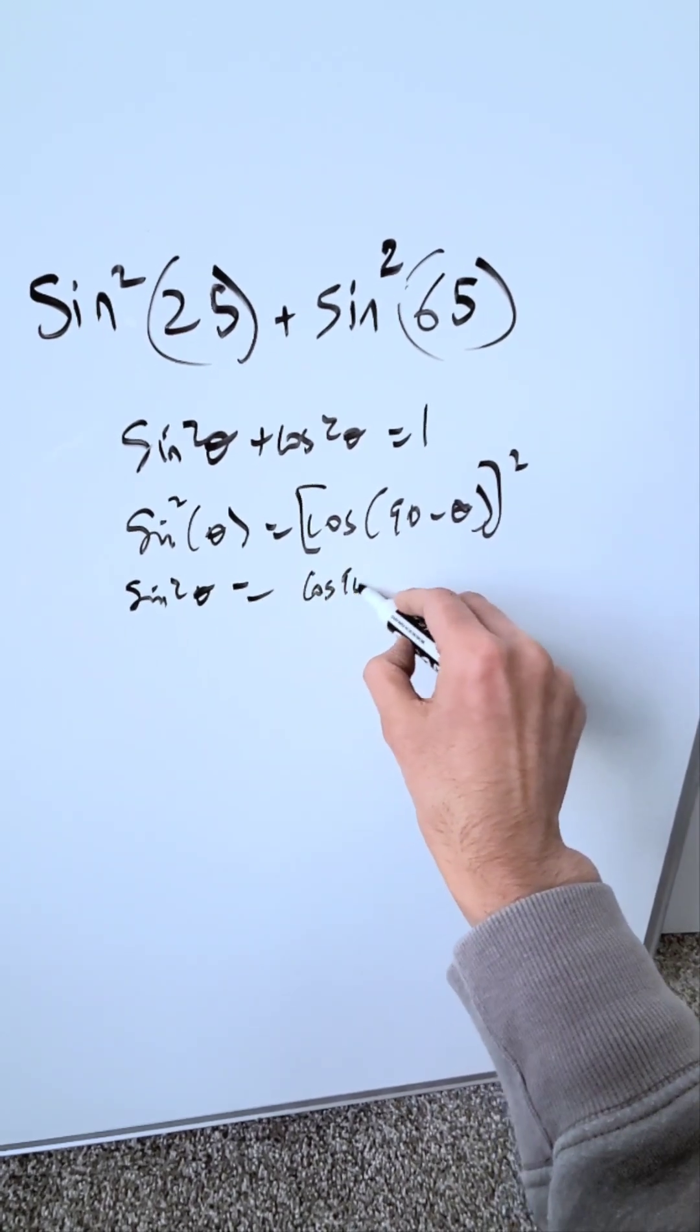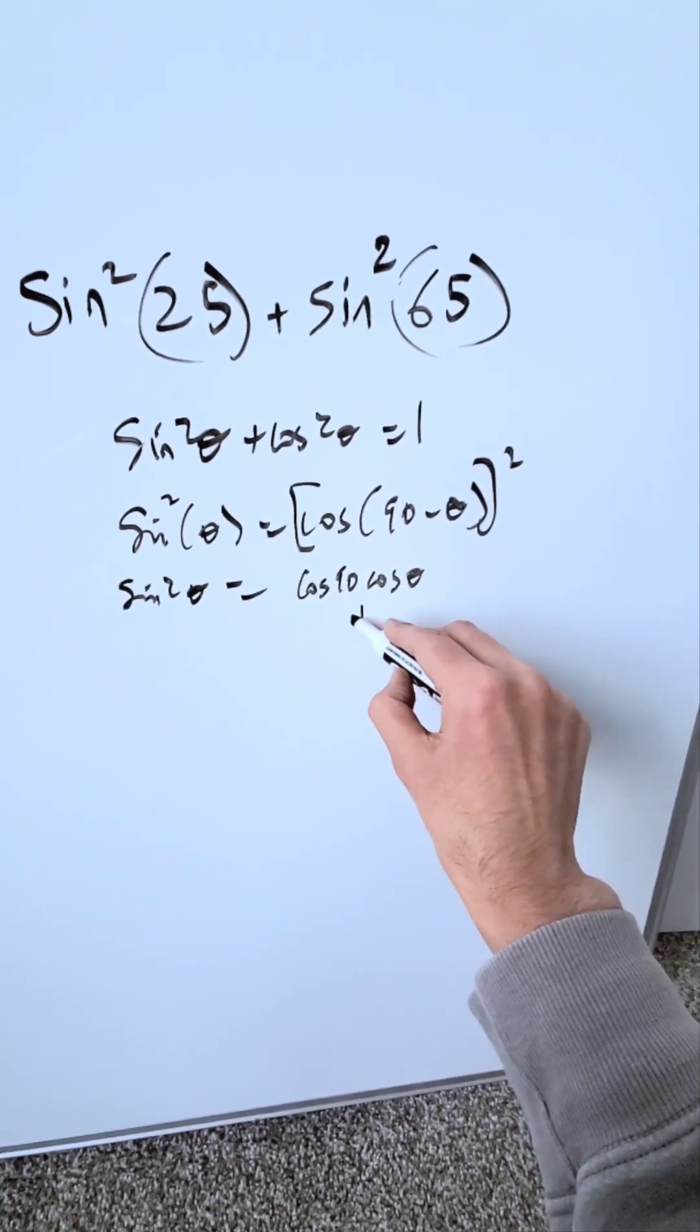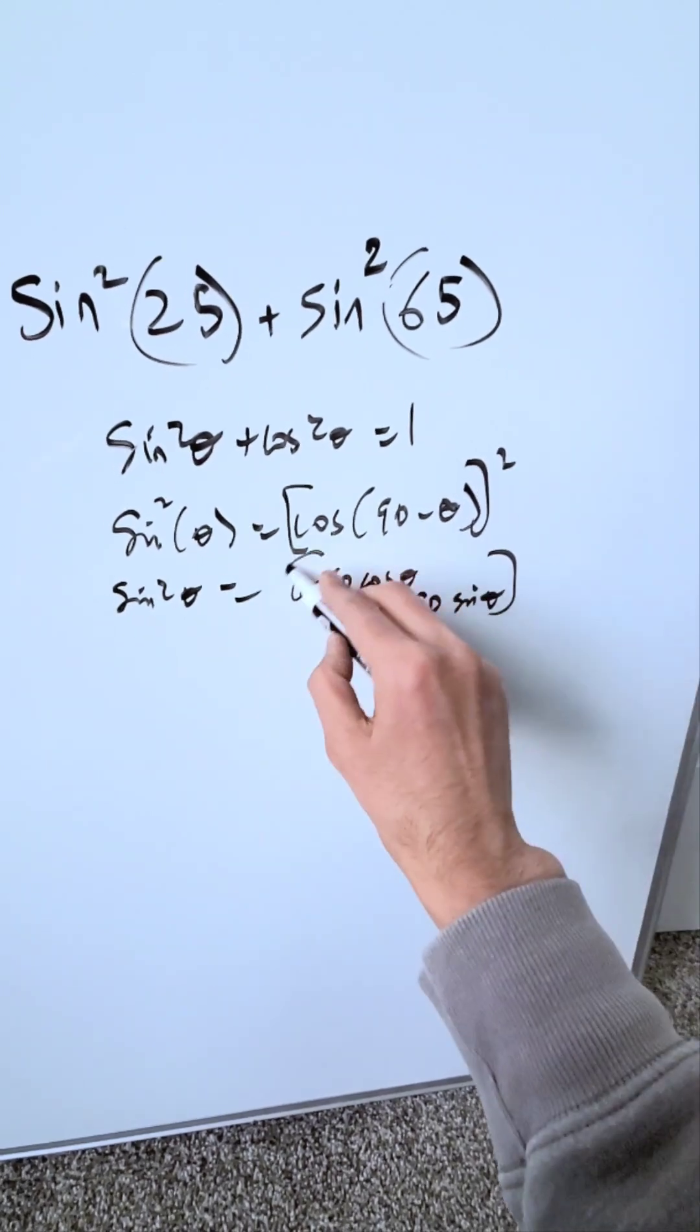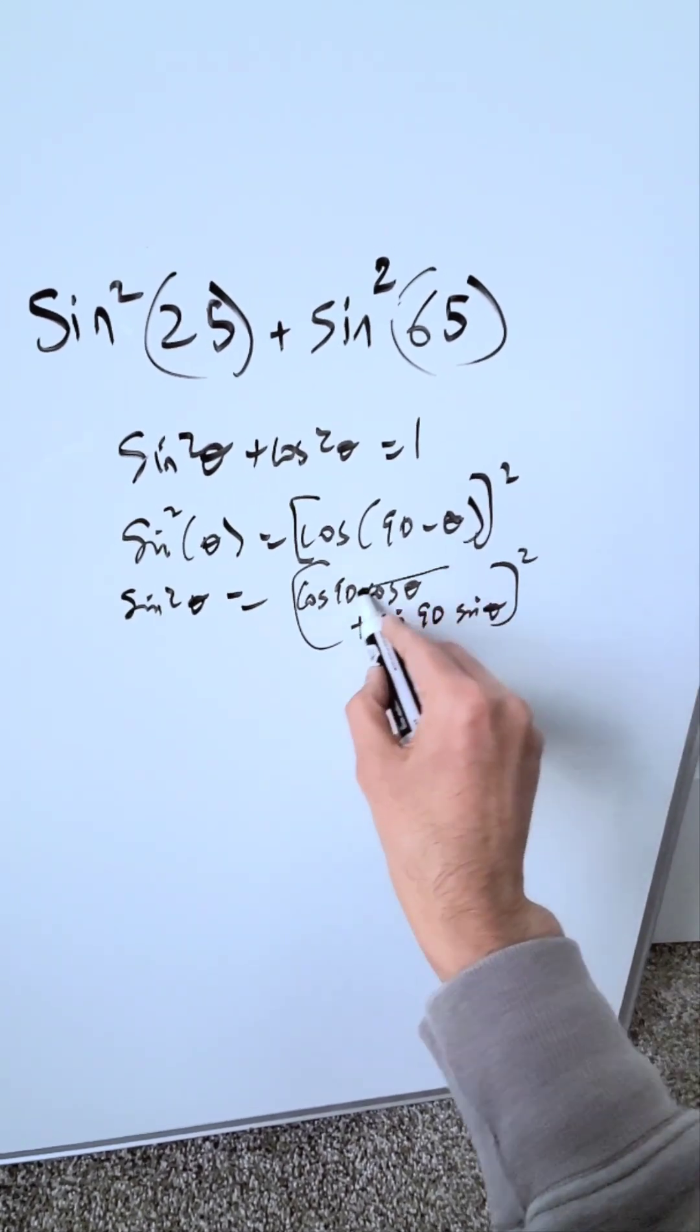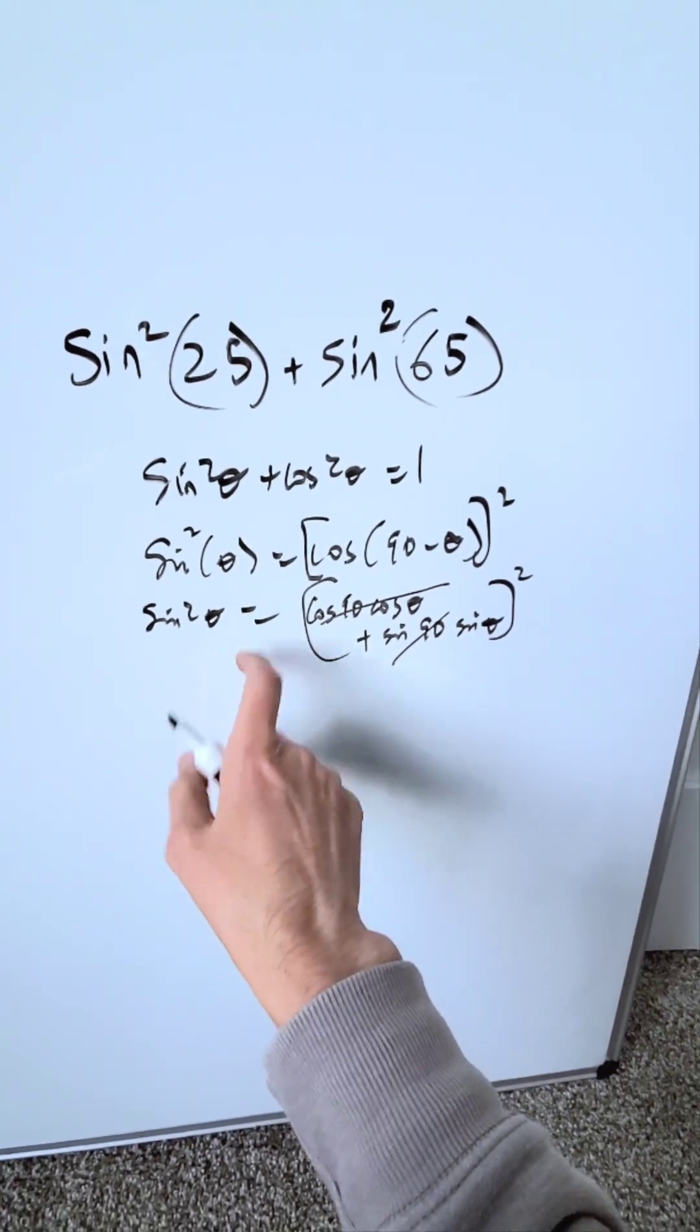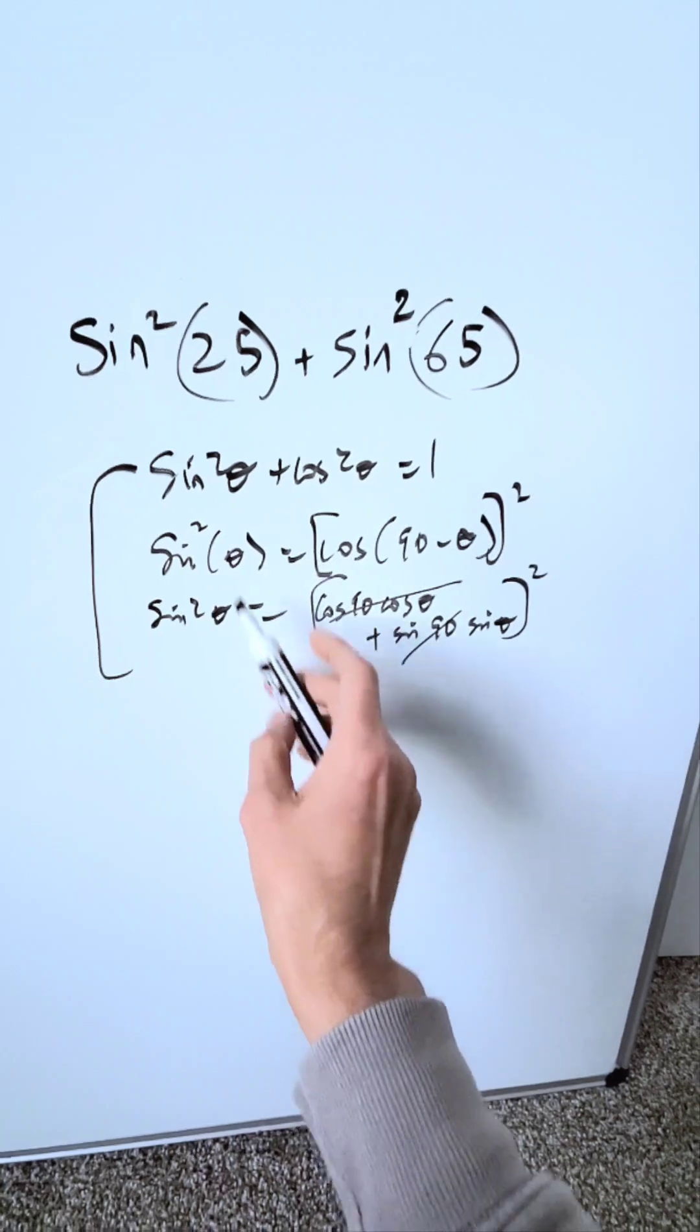You have here cosine 90, cosine theta plus sine 90, sine theta, and then you have that square sitting out. Cosine of 90 is 0, sine of 90 is 1. The only thing which remains is sine squared theta is equal to sine squared theta, and these things are correct.